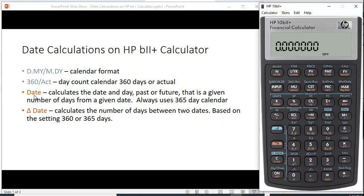Then there's the date, which is the red shift key and the input key. And that calculates the date and day, past or future, that is a given number of days from a given date. And it always uses a 365-day calendar.